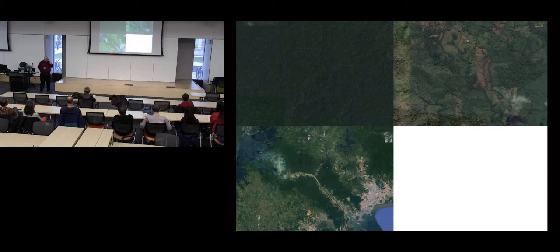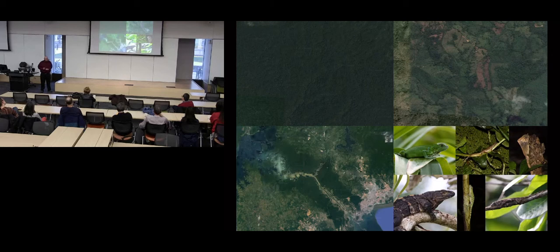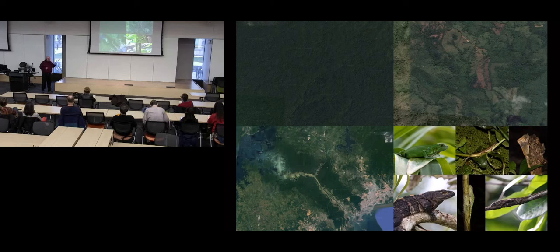There's one particular group of organisms predicted to be strongly impacted: tropical ectotherms. Many animals that live in these environments have evolved under a historically stable climate for the past few million years. As a result, some have lost the behavioral trait of thermoregulating — they're thermal conformers. They don't shuttle between sunlight and shade to regulate body temperature. There's also thought that they may have lost phenotypic plastic responses to changing temperature and even genetic variation associated with changing temperature.